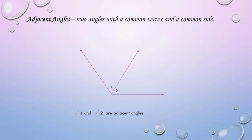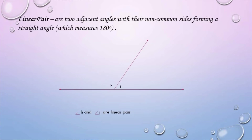Next, adjacent angles — two angles with a common vertex and a common side. So angle 1 and angle 2 are adjacent angles. Linear pair — these are two adjacent angles with their non-common sides forming a straight angle which measures 180 degrees. So angle H and angle J are a linear pair.